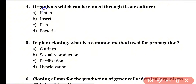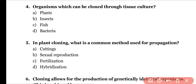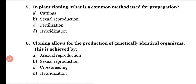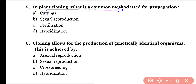Question number four: Which organism can be cloned through tissue culture? Options: plants, insects, fish, bacteria. Correct answer is option A. Plants are commonly cloned through tissue culture.